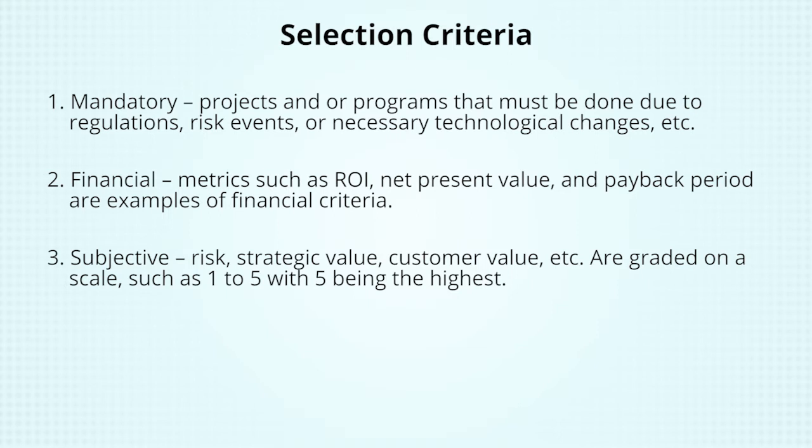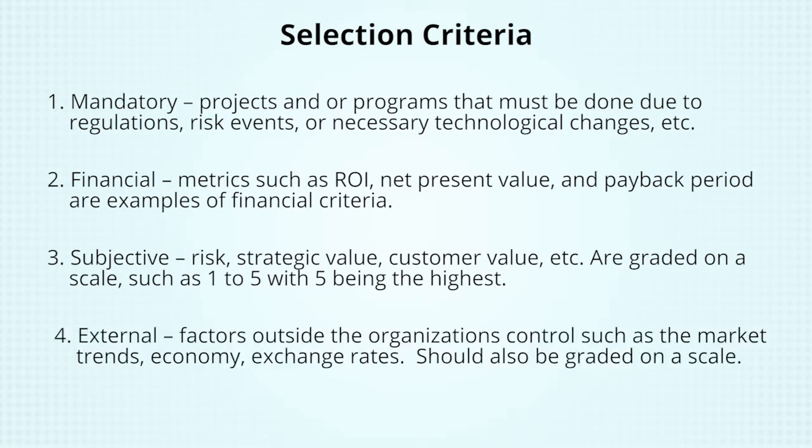For example, a project with a five for customer value means that it rates very high in achieving value for the customer. Four, external. Factors outside the organization's control, such as market trends, economy, and exchange rates. Again, these should be graded on a scale.